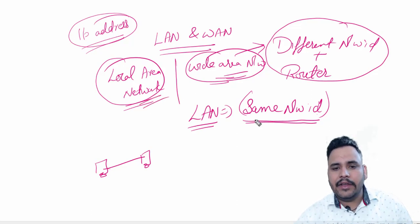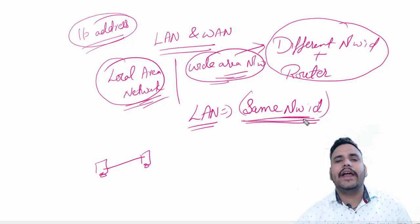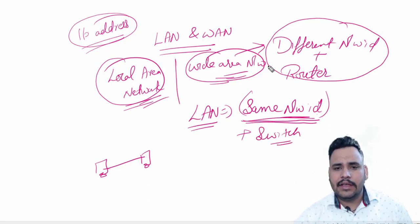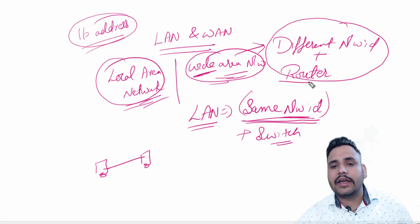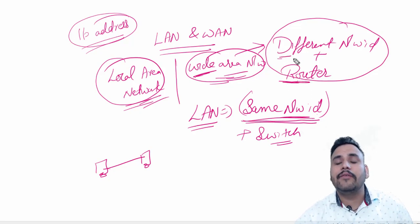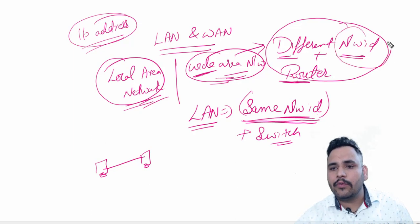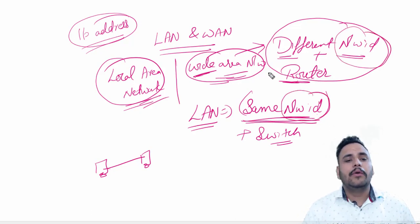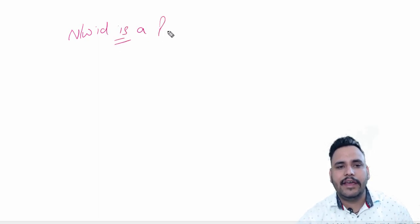In LAN, devices share the same network ID and a switch or hub is used in LAN. But in wide area network, a router is used with different network IDs. So first of all we need to know about what a network ID is, because with the help of network ID we can make LAN and WAN. Network ID is a part of IP address.